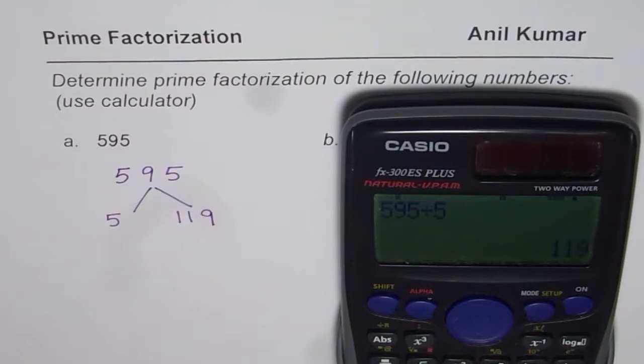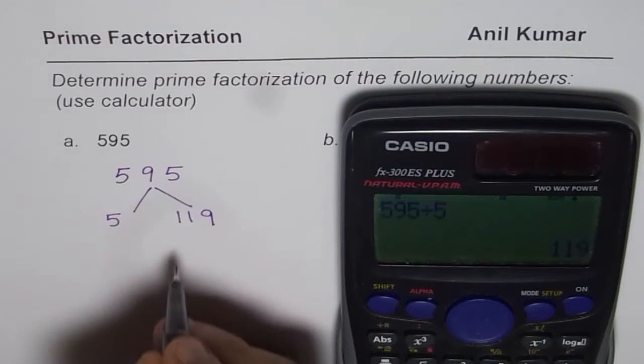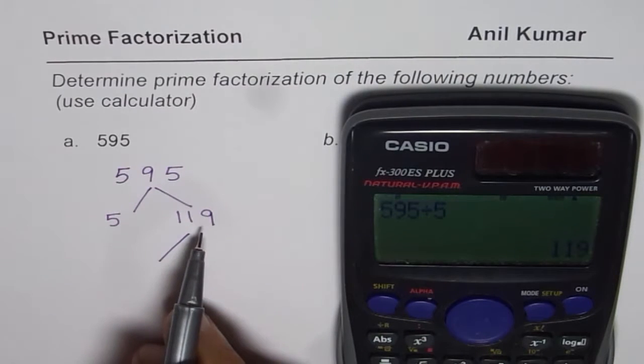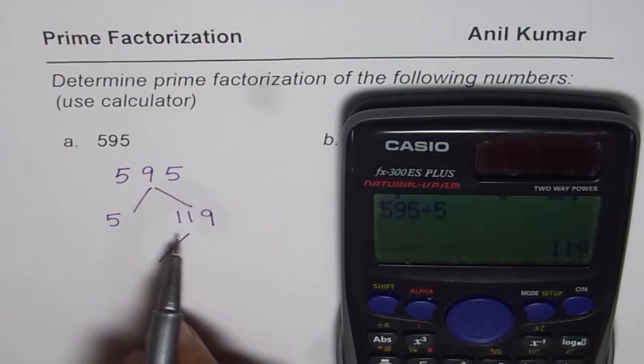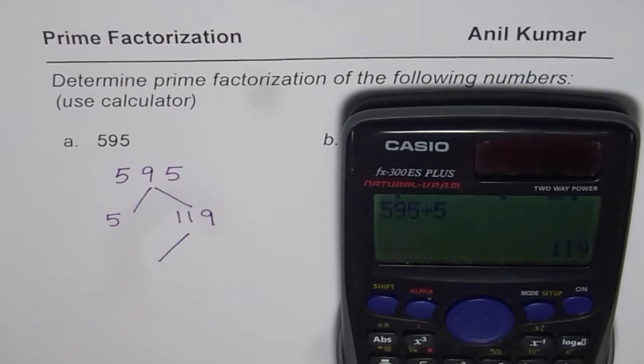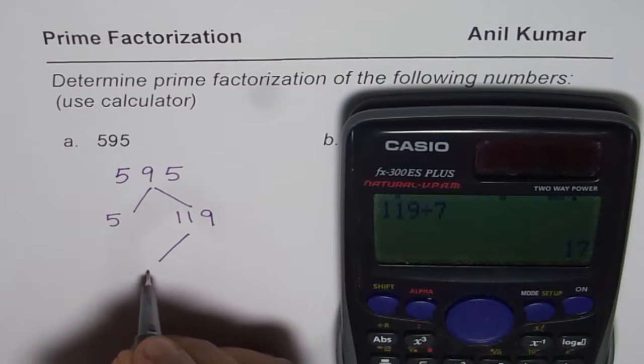Now, 119 is also a very difficult number to work with. We will do trial and error. It could be a prime number also. We will divide 119 by different numbers. Let us divide by 7. What do we get? We get 17. So we are successful.